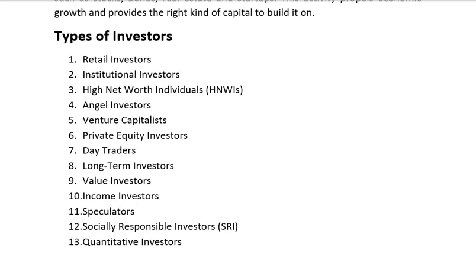Ninth is value investors, who seek undervalued stocks or assets aiming to buy them at a discount to their intrinsic value. Income investors prioritize investments that generate regular profits, inclusive of dividends from shares, interest from bonds, or rental income from real estate. They often seek stable and dependable cash flow.